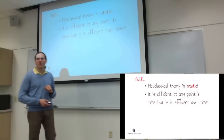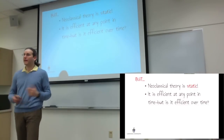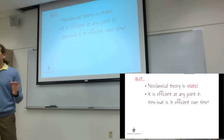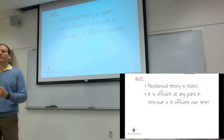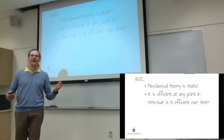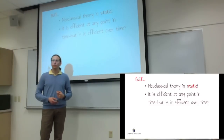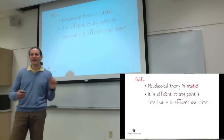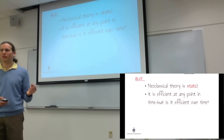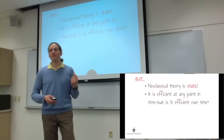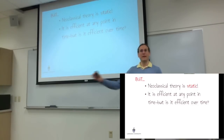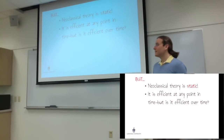Schumpeter asks: is it possible that an economic system is efficient at any point in time, and yet over time there could be a way to make it more efficient? Is it possible that in order to reach efficiency in the long run, we must sacrifice some efficiency in the short run — that we must tolerate some inefficiency in the short run to reap the benefits in the long run? That's an important distinction Schumpeter makes.